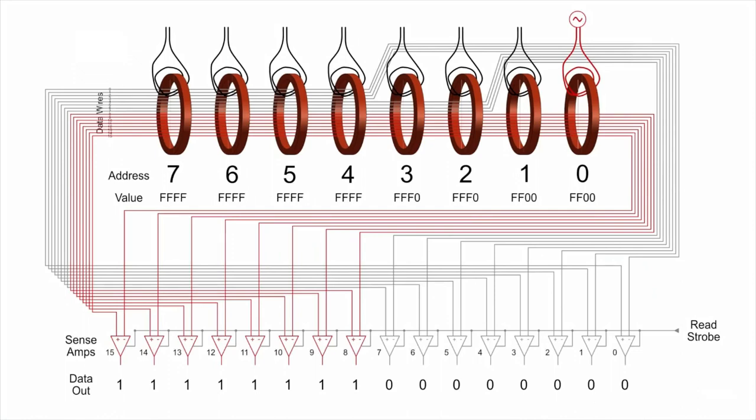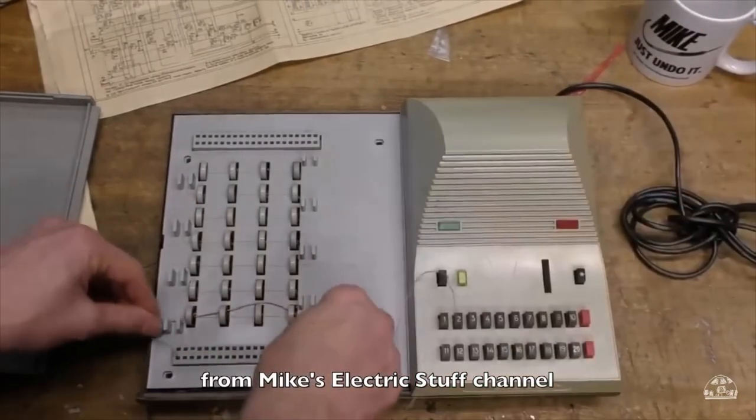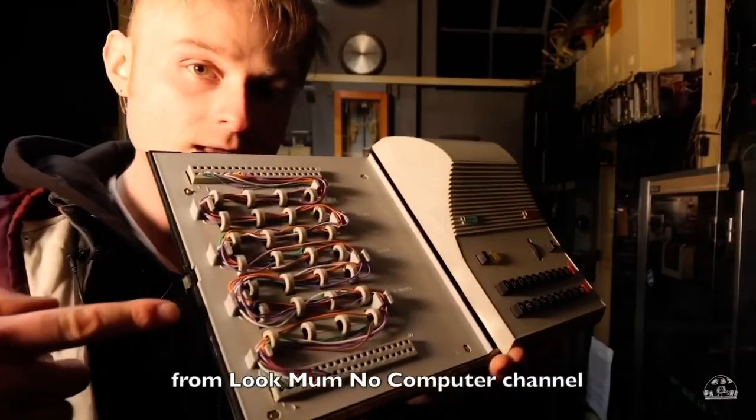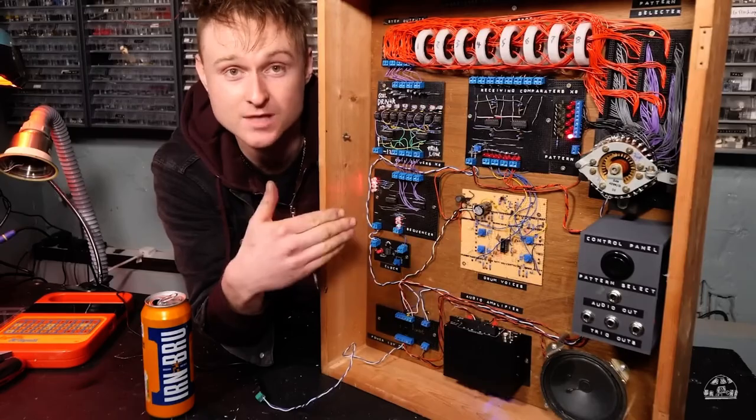This is a perfectly legit scheme, so much so that it has a name. It is called transformer read only storage, or TROS. It was used by weird soviet phone dialers, and even IBM for their 360 computers. And even better, gleefully misused by Luke Mano computer to make a genius drum machine.